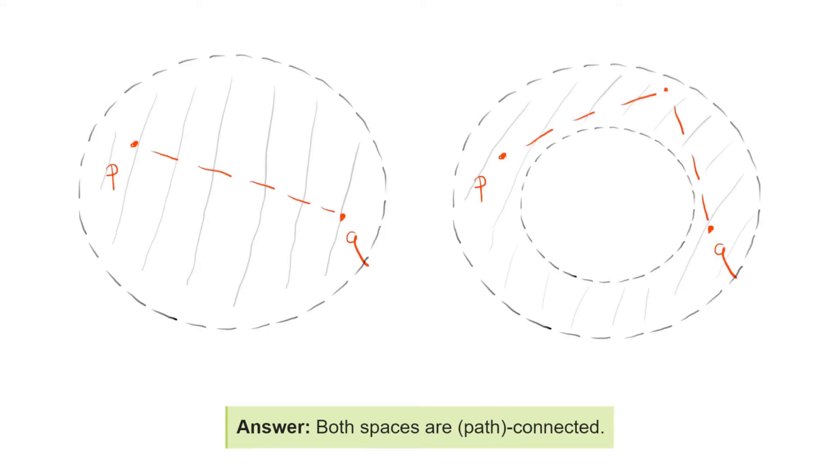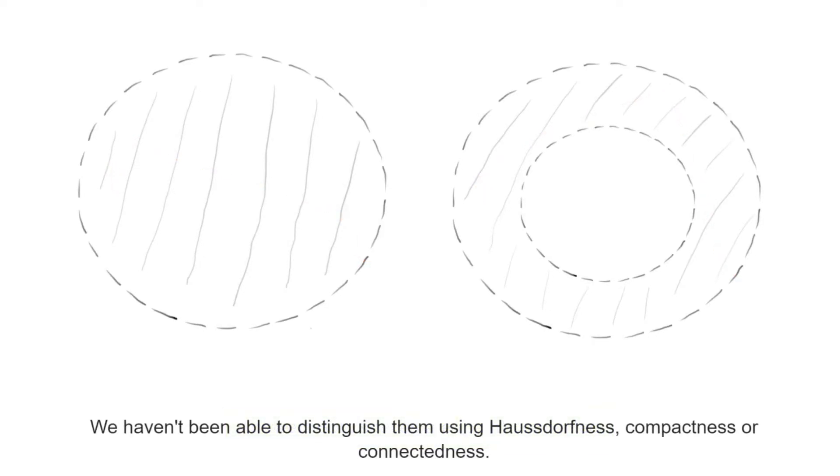We have tested the disk and the annulus using Hausdorffness, compactness, and connectedness. However, these properties haven't been able to tell us that these two spaces are not homeomorphic because they gave us the same answer in both cases.